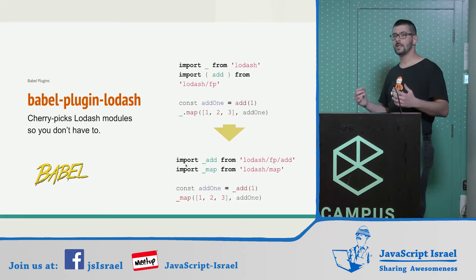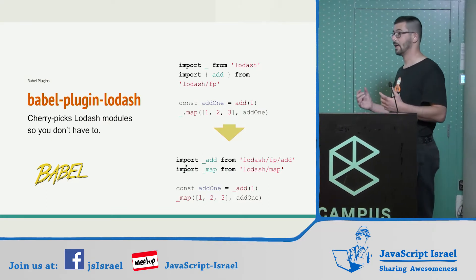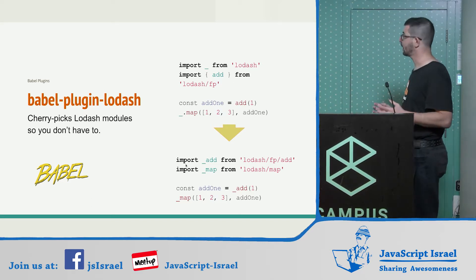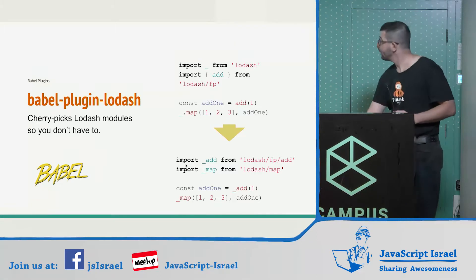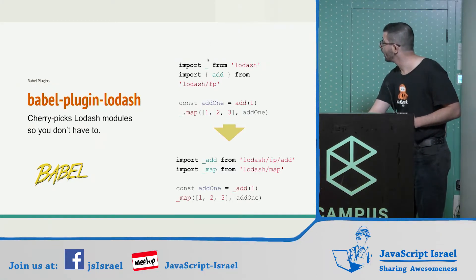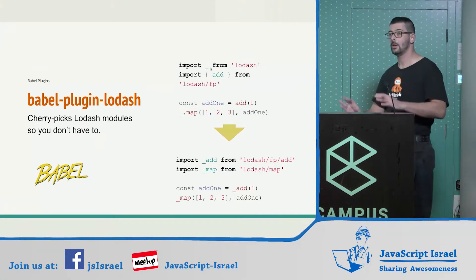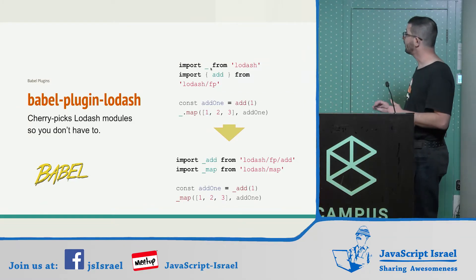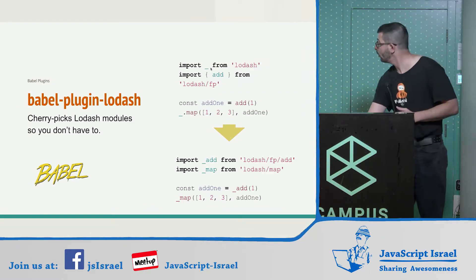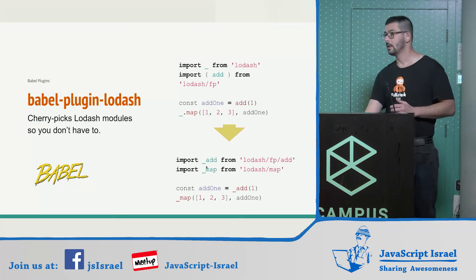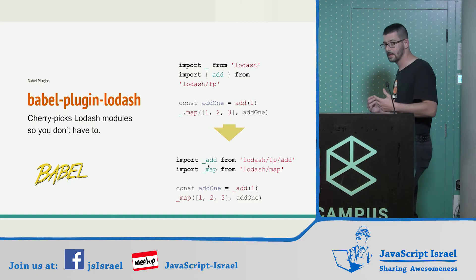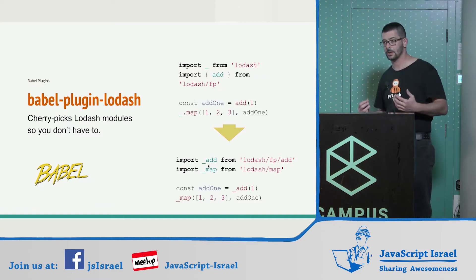Take a look, for example, at this Babel third-party plugin we could use. What it does is analyze our code, and whenever it sees that we are importing the whole Lodash library, it breaks it down into more specific imports. This reduces our bundle size so we don't have to import the entire Lodash library anymore.